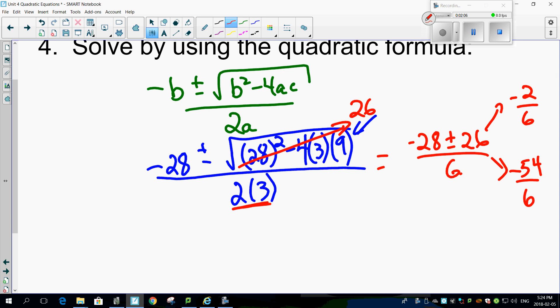Wait a second. This can be reduced. That becomes minus 1 third. This can be reduced because 6 goes into minus 54. That becomes minus 9.